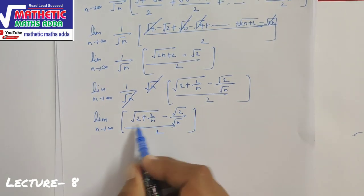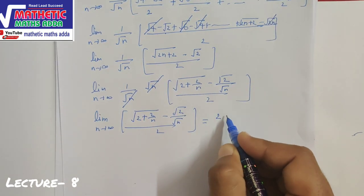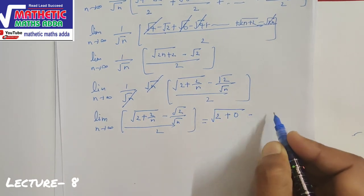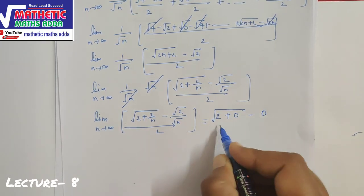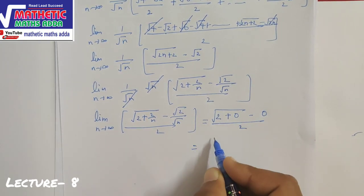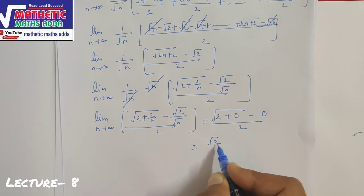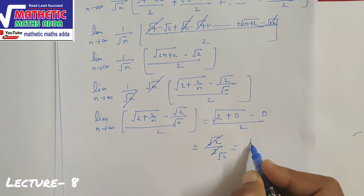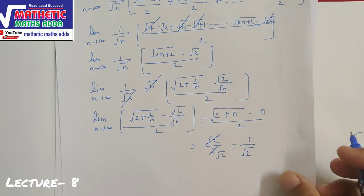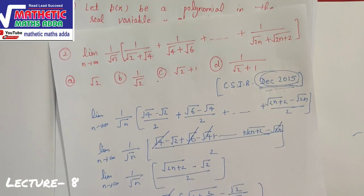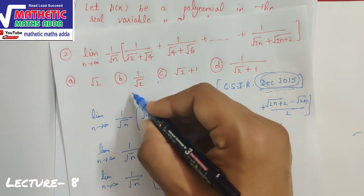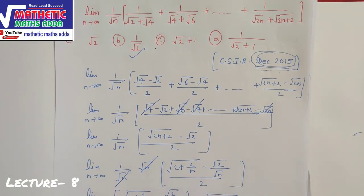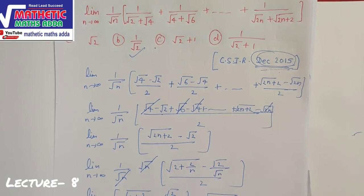Applying the limit as n→∞, √2/n → 0 and √2/√n → 0. The expression becomes √2 / 2, which simplifies to 1/√2. So the answer to this question is also 1/√2.